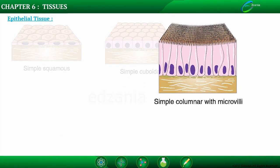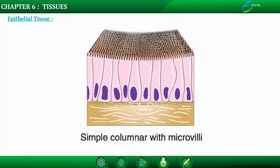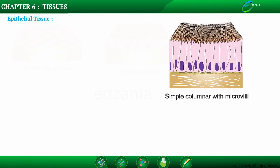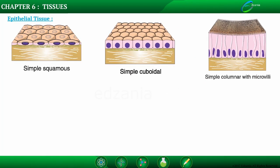Simple columnar epithelium is composed of a single layer of tall, pillar-like cells. The nuclei of columnar epithelium cells are present at the base. These three tissues — squamous, cuboidal, and columnar — are called simple epithelial tissues because they consist of only one layer of cells.